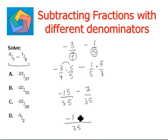On the numerator we have negative 15 minus 7. Negative 15 minus 7, that is two negative numbers, will be added, that is 22, with a negative sign, divided by 35. So this is the final answer, and can be seen in option C.